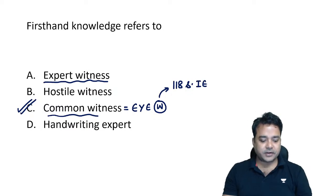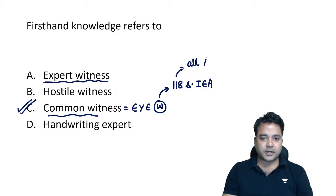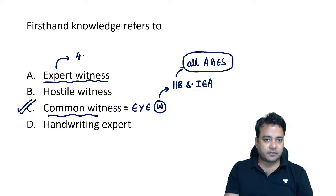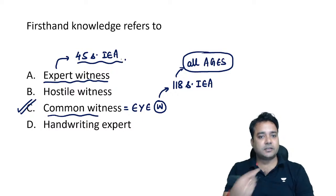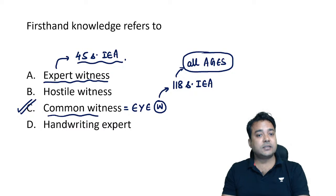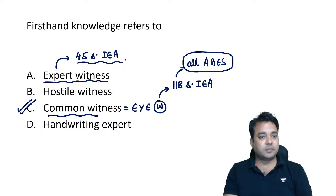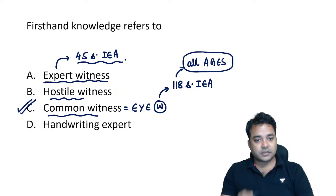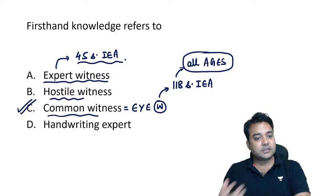Common witnesses are defined in Section 118 of the Indian Evidence Act. According to this section, all ages are competent to be common witnesses; the maturity of understanding will be decided by the judge, but even small children can become common witnesses. Expert witnesses are defined in Section 45 of the Indian Evidence Act — any witness whose findings or opinion related to a case is admissible in court. Hostile witness simply means a witness who turns away from a previous statement.